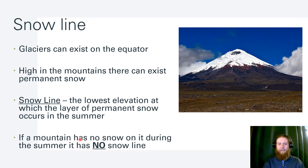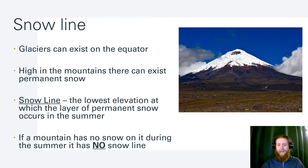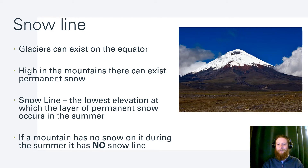The snow line is this magical line where glaciers can exist. We can have glaciers on the equator as long as they're high up in the mountains where there's permanent snow. The snow line is the lowest elevation at which there's a layer of permanent snow year-round — January through December — it doesn't melt off in the summer. If a mountain has no snow on it during the summer, it has no snow line. You have to have a snow line to have glaciers.